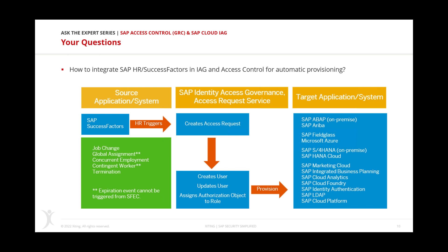In IAG, the same SuccessFactors integration is also possible. IAG is a cloud product that can connect to cloud solutions directly. SuccessFactors sends events into IAG similar to HR triggers in Access Control. In IAG you can build business rules, and based on those rules you can automatically create access requests — whether to create user, update user, or whatever the case — and then provision both on-premise and cloud applications. This covers job changes, assignment changes, terminations, and more.